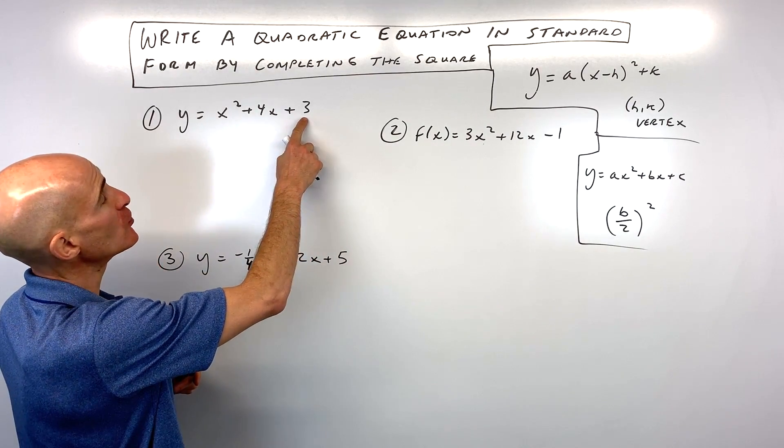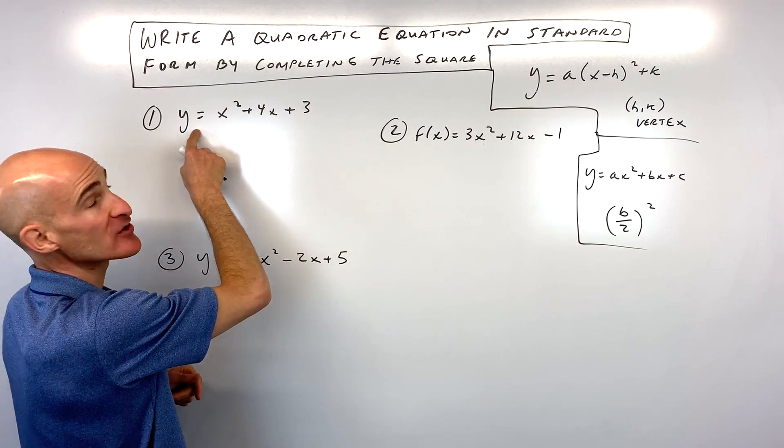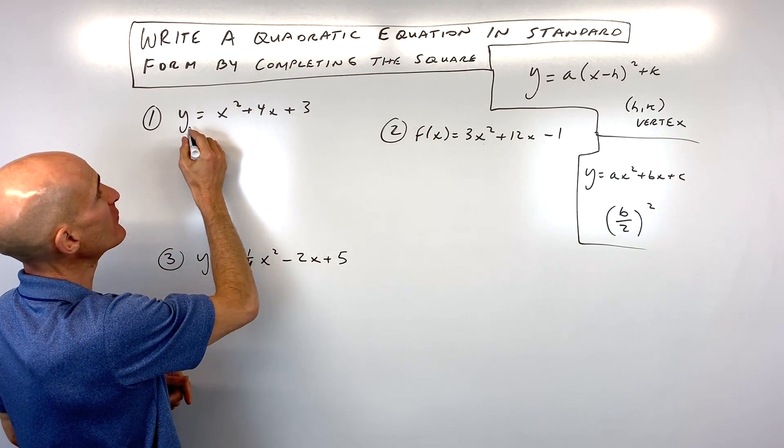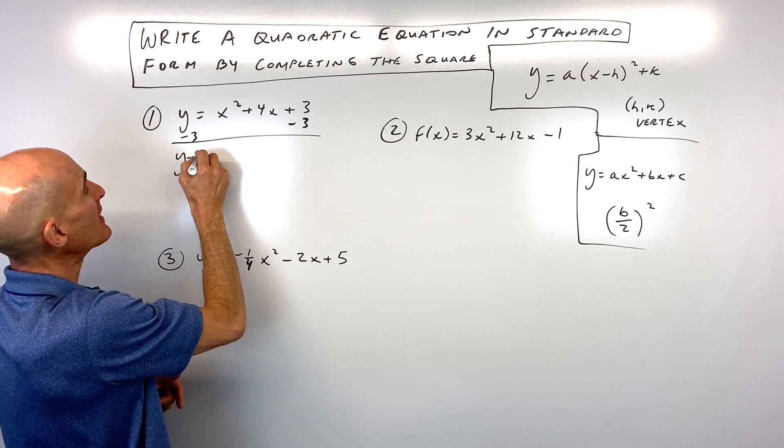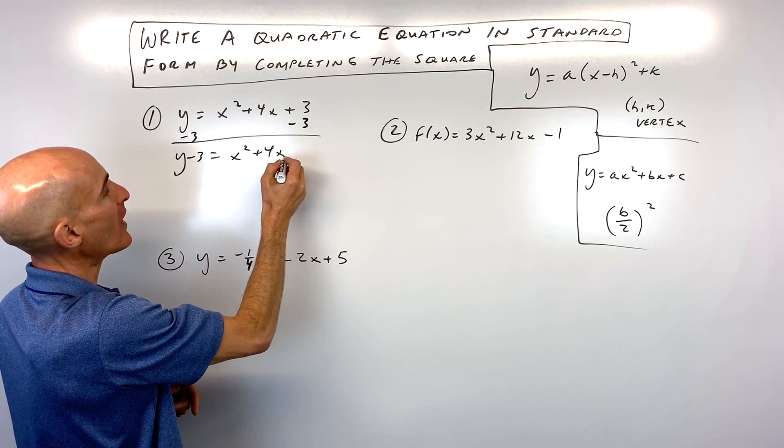So the first thing that I recommend doing is moving the constant, this number over here, to the other side of the equation. So I'm going to subtract 3 from both sides. So that gives us y minus 3 equals x squared plus 4x.